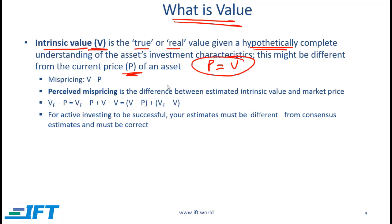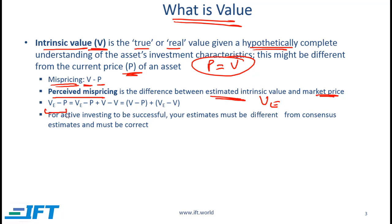But all markets are not necessarily efficient and all assets are not necessarily priced efficiently, so there might be some mispricing. That mispricing is equal to the true intrinsic value of an asset minus the market price. Since we cannot be 100% sure about V, we talk about perceived mispricing, which is the difference between the estimated intrinsic value VE and the market price P — so VE minus P.